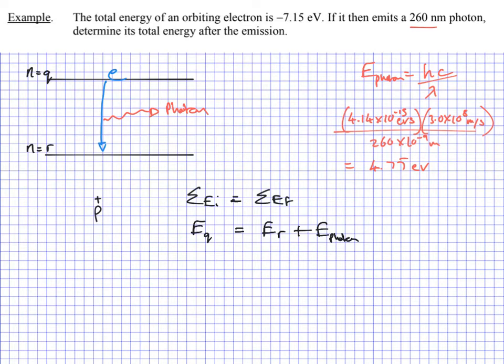Now we just have to rearrange this and solve for the ER, because that's what we're trying to find out, the total energy after the emission. So the ER state is going to be the EQ state minus this energy from the photon. So ER is EQ, which is negative 7.15 eV, minus the photon energy, which is plus 4.77 eV. And that gives us negative 11.9 eV. That makes sense because when we're using these negative values, the further we drop down, the more of a negative value we should have.